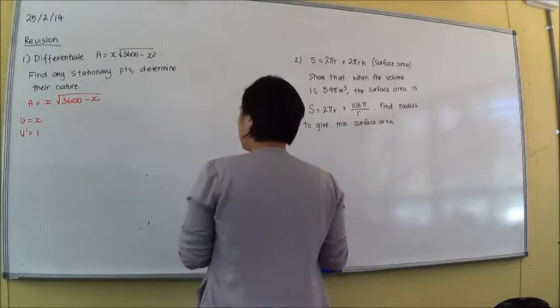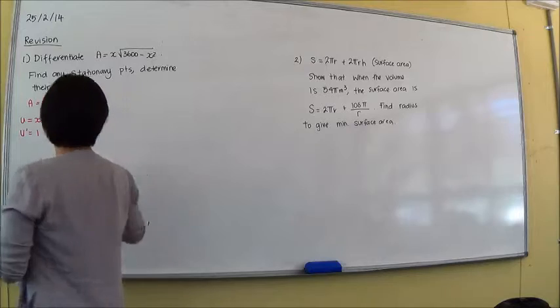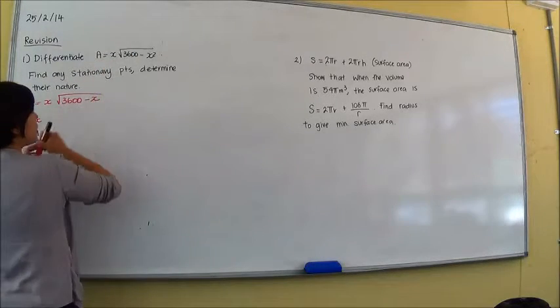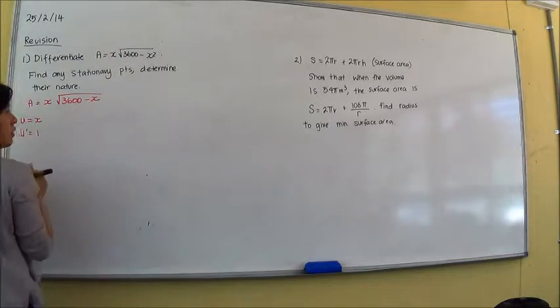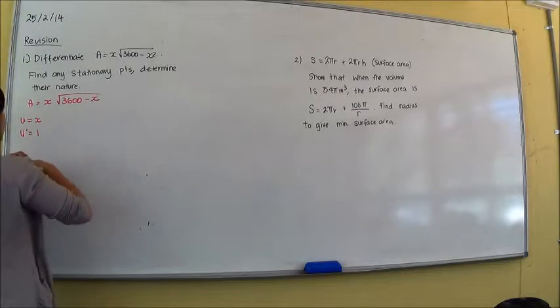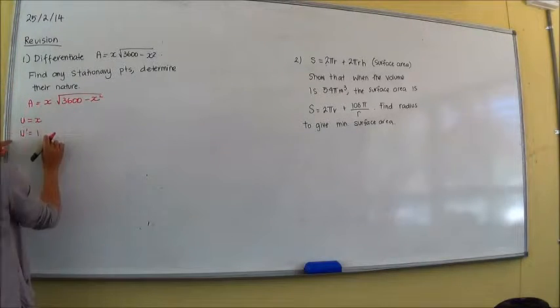A equals x square root of 3,600 minus x squared. No, it's A equals x times the square root of x squared. Yeah, but in the square root, in the square root of x squared. So that's u dash.